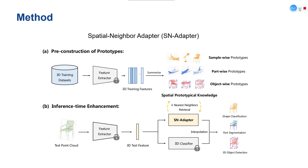Using a trained feature extractor, we first obtain all the high-dimensional features of point clouds from the training dataset. For different 3D tasks, we summarize the features as various forms of prototypical spatial knowledge: sample-wise, part-wise, and object-wise prototypes.